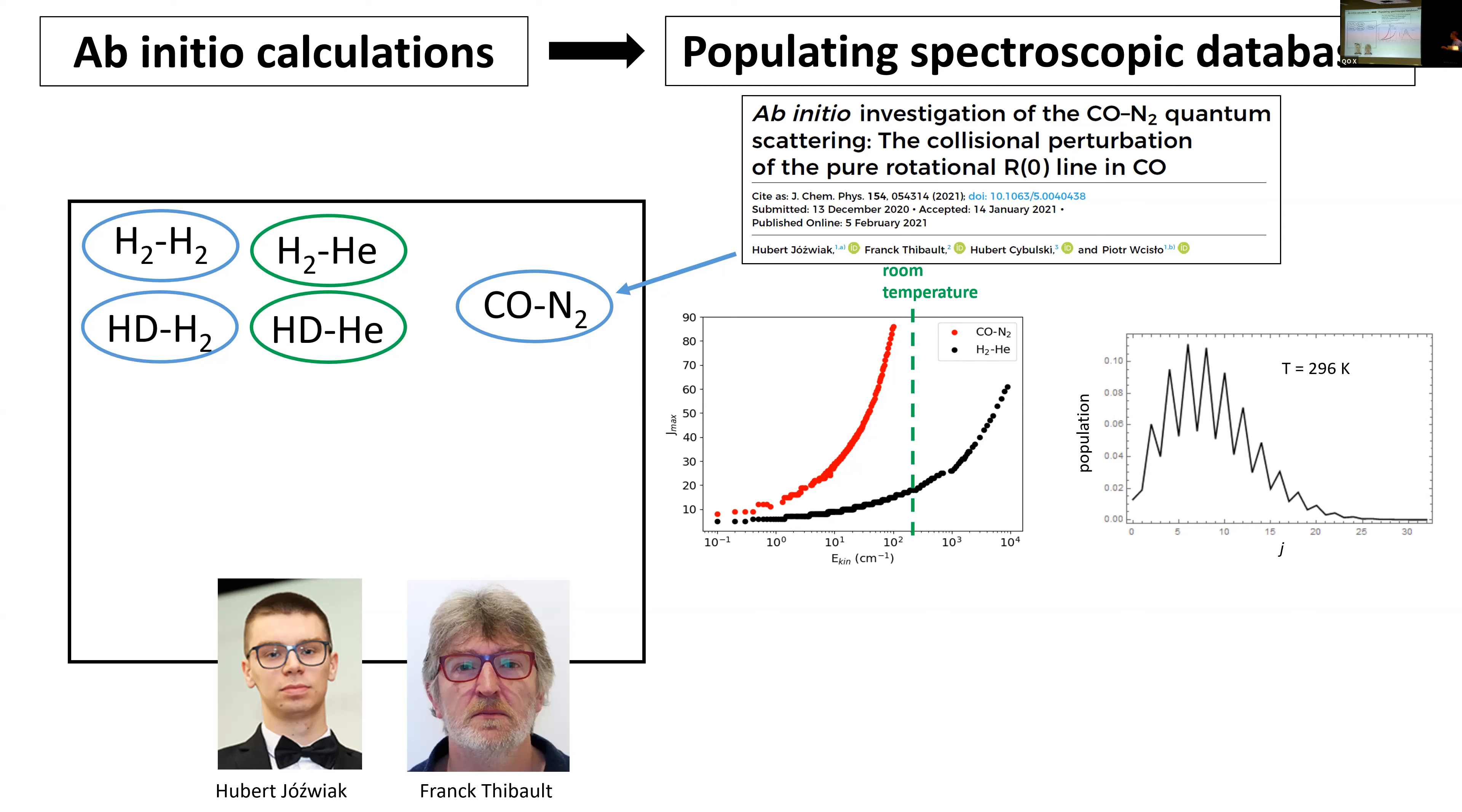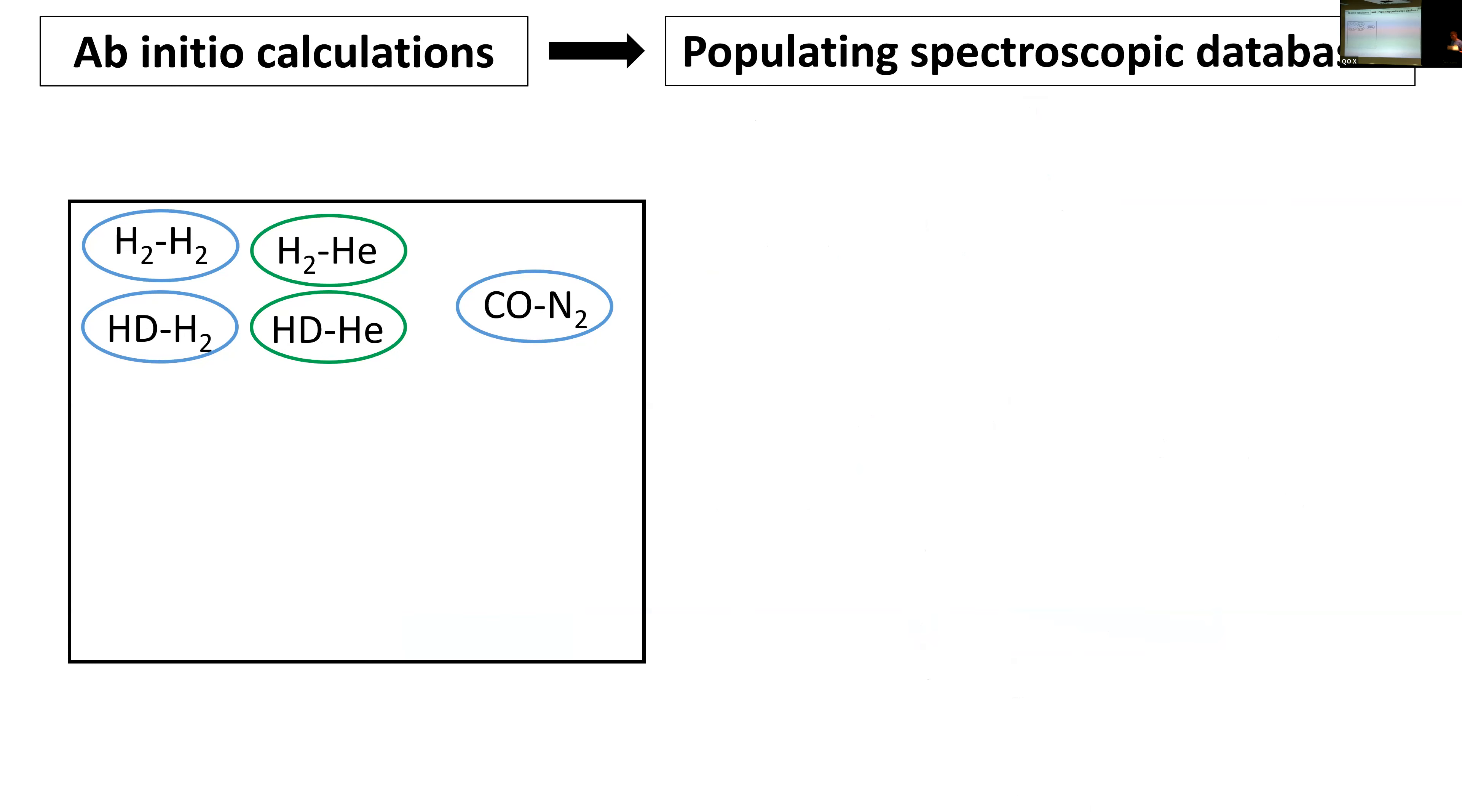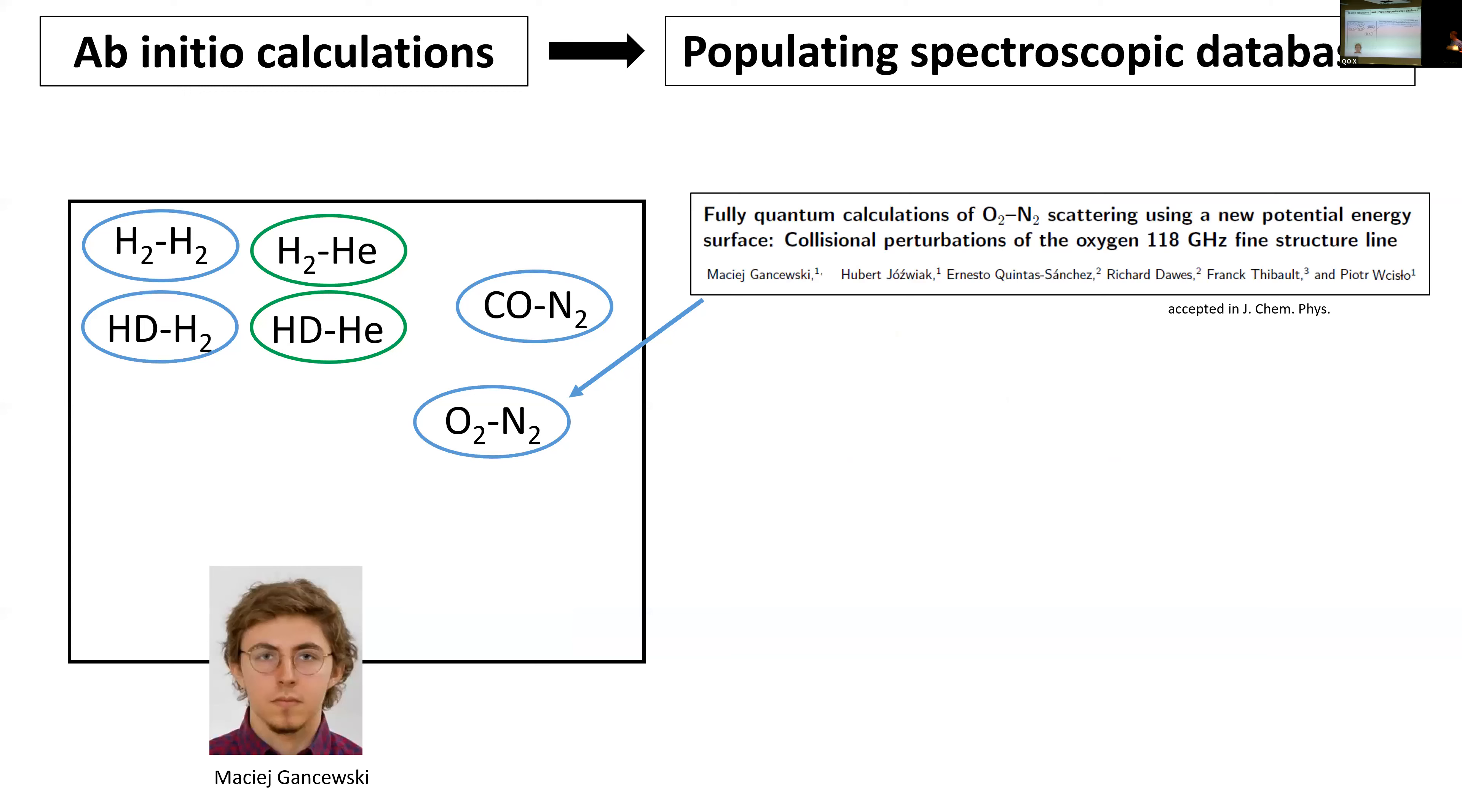Finally, the rotational constant of N2 is much smaller, so the basis is larger. But despite that, mainly our student Hubert Jóźwiak managed to finish the calculations for it. We reached a really excellent agreement with all the available experimental data. This is a single line, but we demonstrated the methodology works and we are on the good way to start populating the database.